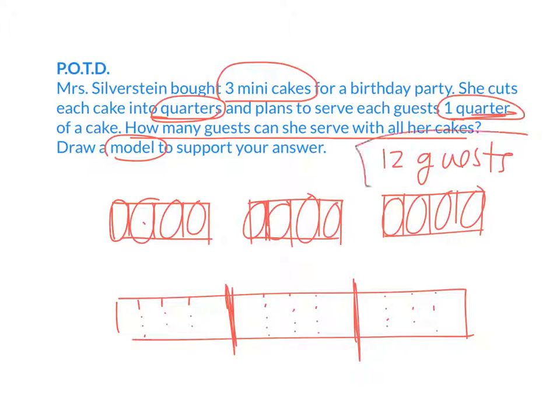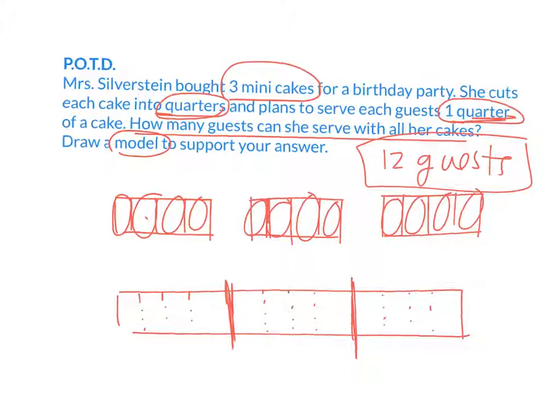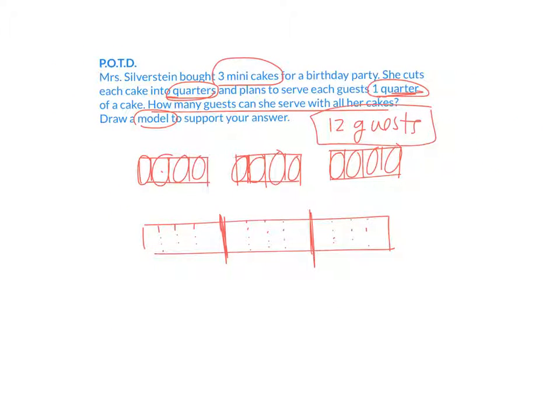Now, the question doesn't ask you to do this, but can you write a division equation that's represented by this problem? What would our whole be? Three. Because how many cakes are we starting out with? Three. We're dividing it into what sized pieces? One-fourth. One-quarter. Yeah, one-fourth. So this equation would be three divided by one-fourth is equal to? Twelve.